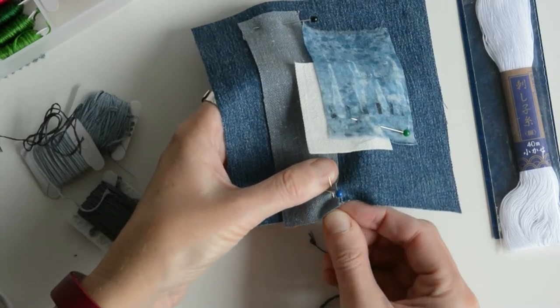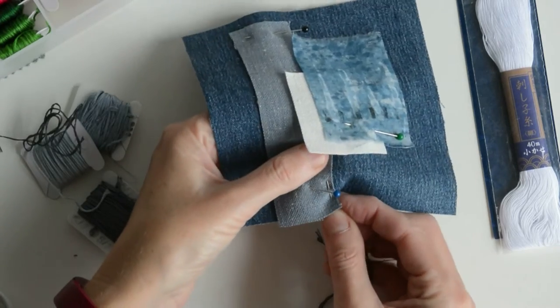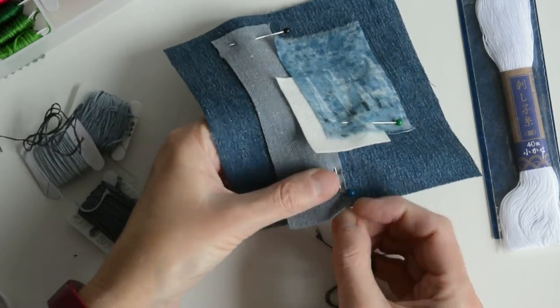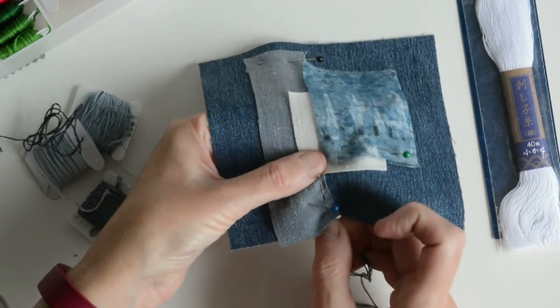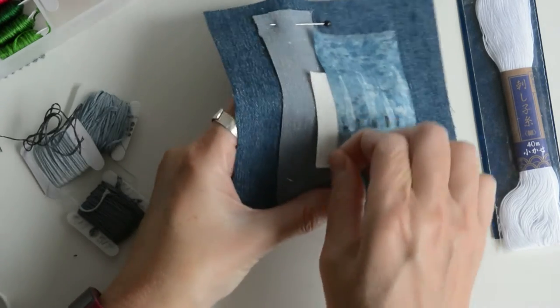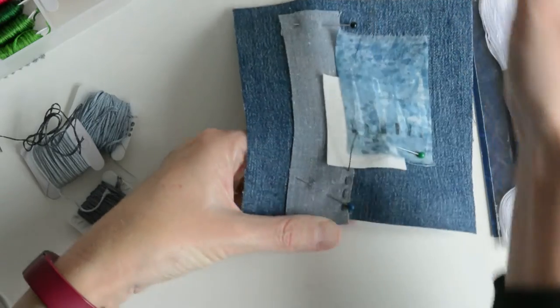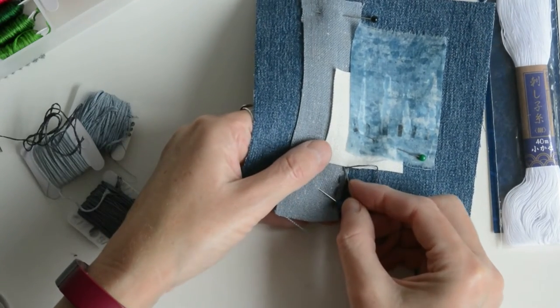Right, so running stitch. I've got some embroidery thread which I split in half so I've got three strands on my needle, and I'm creating a simple running stitch, threading the needle through from side to side of the fabric.